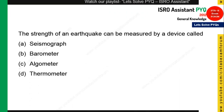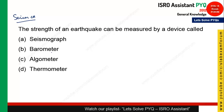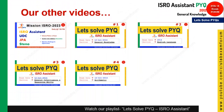The next question is from science: the strength of an earthquake can be measured by a device called what? A thermometer is used for temperature, a barometer is used for atmospheric pressure, and a seismograph is used for measuring earthquakes. Option A — seismograph — is the correct answer.